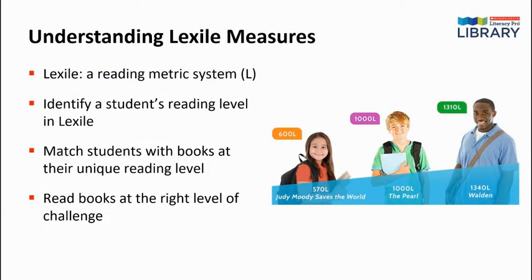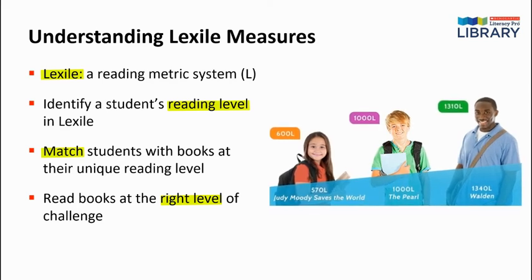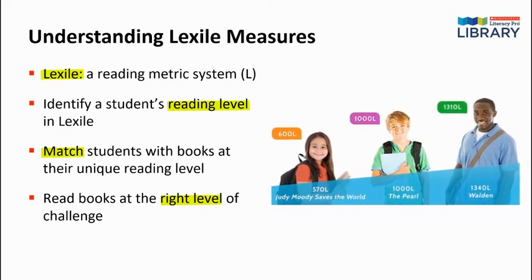Your students might be the same age, but have very different reading levels. It can vary as much as their shoe sizes. Lexile is a reading metric system which identifies your students' reading abilities in Lexile levels. It also matches your students with books at their unique reading level so that they get the right level of challenge. The idea behind Lexile is simple: if you know how well a student can read and how hard a specific book is to comprehend, you can predict how well that student will likely understand that book.